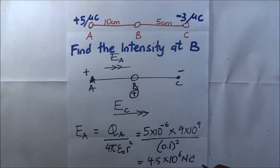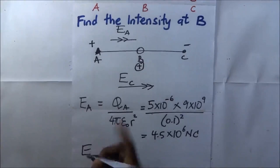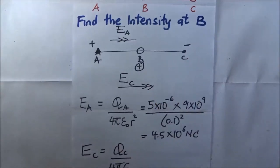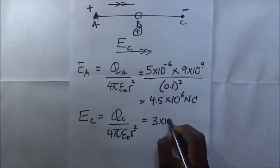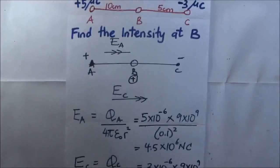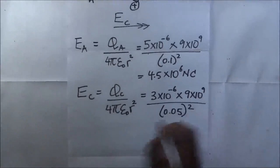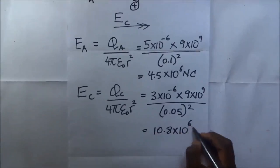We go on to find the intensity due to C. E_C equals q_C over 4πε₀r². q_C is 3 microcoulombs, so it is 3×10⁻⁶ multiplied by 9×10⁹, divided by the distance between B and C which is 5 centimeters — converting to meters gives 0.05 m — so it is 0.05 squared. Our answer for E_C is 10.8×10⁶ newtons per coulomb.